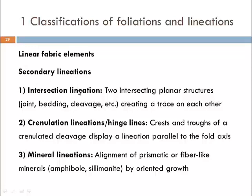The first type is an intersection lineation — simply the trace created when two non-parallel planar structures intersect, such as a joint and bedding, joint and cleavage, or two cleavage planes. The second type is crenulation lineations: in the process of microfolding, crenulations have hinge lines that form linear fabric elements — the crests and troughs of crenulation cleavages — which will be parallel to the fold axis of the microfolds.